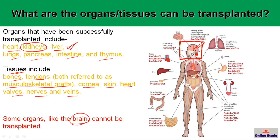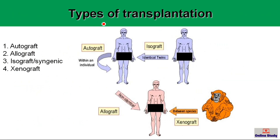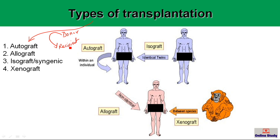So what are the types of transplantation? Scientists have categorized different types of transplantation to make it easy to understand where the organ is coming from and where it is going. They have categorized them into at least four classes: autograft, allograft, isograft (or syngeneic transplantation), and xenograft.